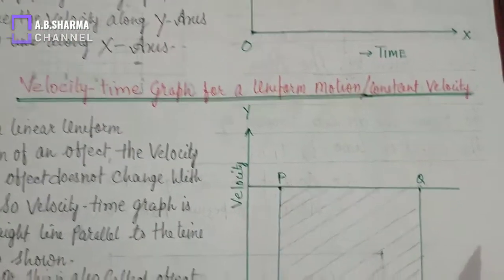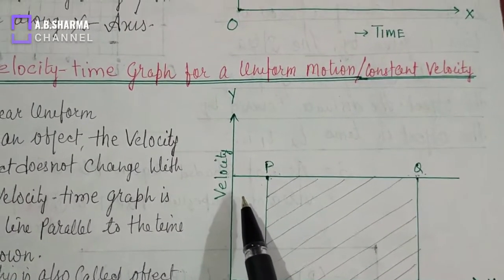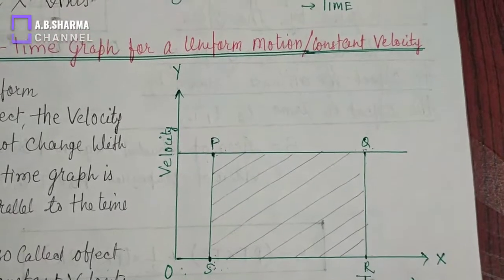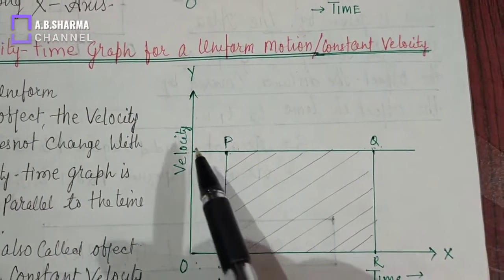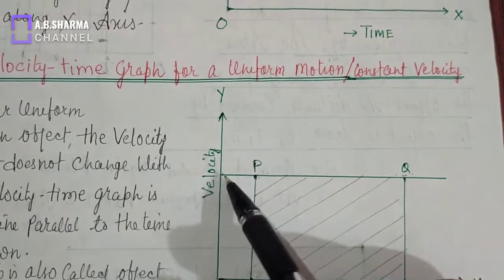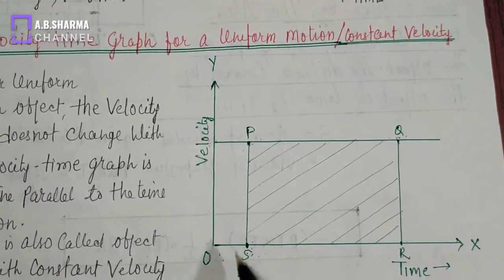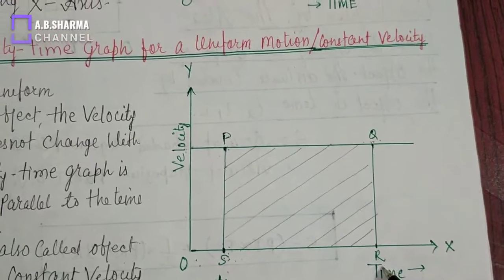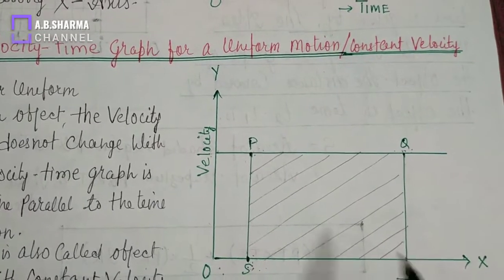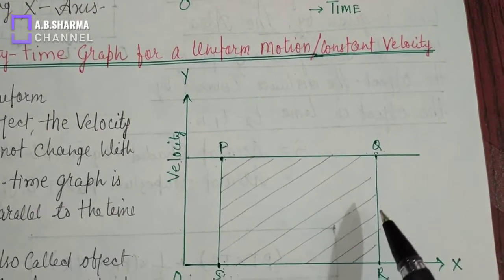Now, velocity time graph for uniform motion or constant velocity. When an object has uniform motion, meaning it is traveling with constant velocity, the graph will be parallel to the time axis. If an object has some non-zero velocity V1 and is moving with that velocity constantly, then at time T1 velocity is V1, and at time T2 the velocity is also V1. Time is increasing but velocity is not — this is the case of uniform velocity.